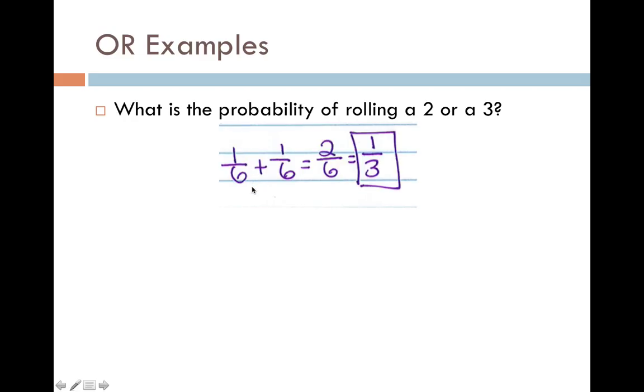The probability of rolling a 2 is 1/6 plus the probability of rolling a 3, which is 1/6. 1/6 plus 1/6 gives me 2/6. And I can reduce that down to 1/3.